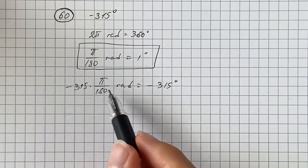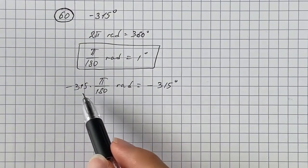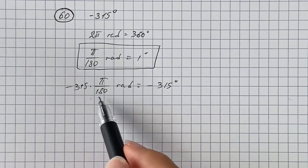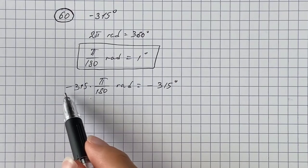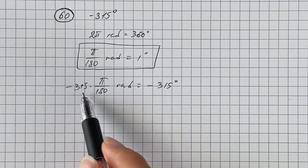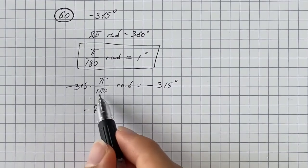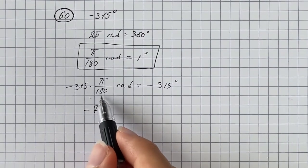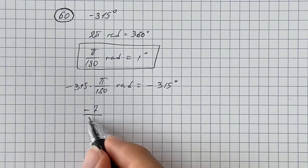Here we're going to simplify. 45 will go into both numbers, so 45 will go into negative 315 by negative 7 times, and it will divide 180 by 45 to get 4.